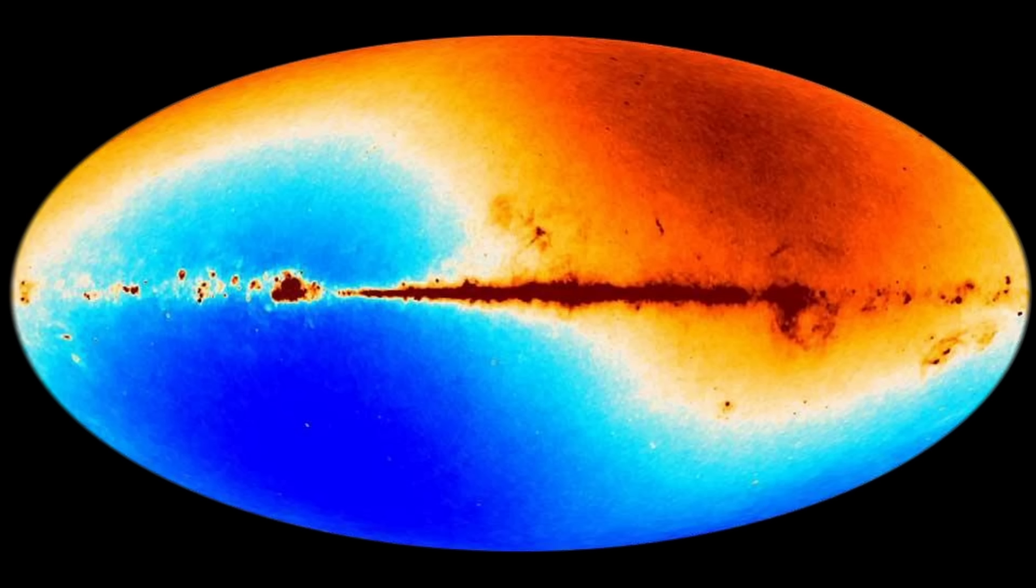Foreground subtraction is only needed to clean away galactic dust and synchrotron emissions. The dipole itself remains robust and unambiguous.